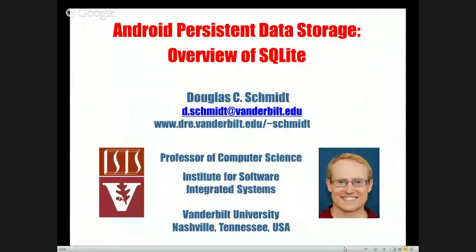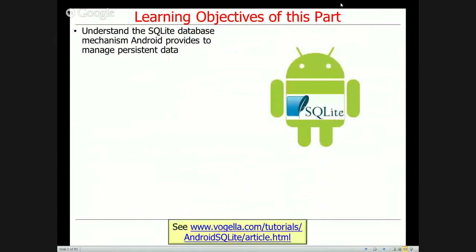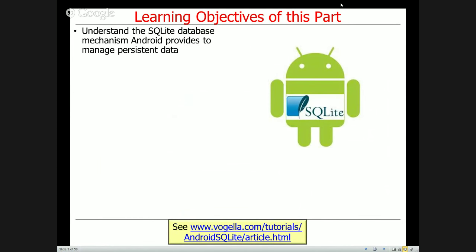So what we're going to start talking about today is SQLite, which is basically the database mechanism that Android provides to manage persistent data. We'll talk about the features it provides, and then we'll also show how to apply SQLite to implement Android content providers.